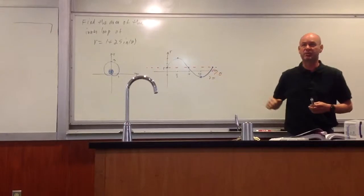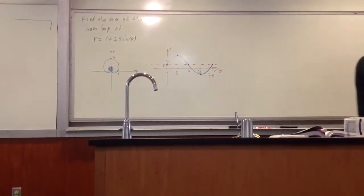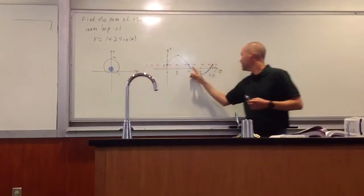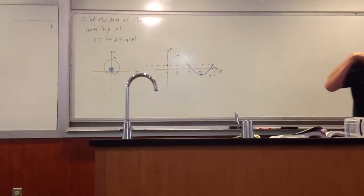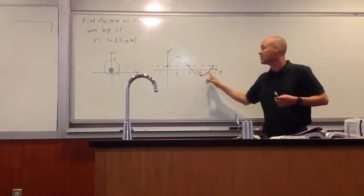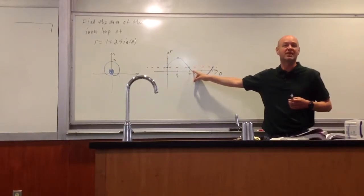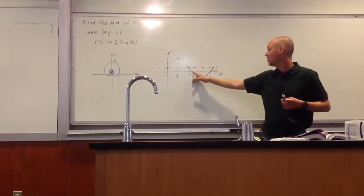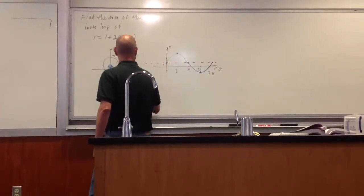I want to talk about the connection between these two. Notice that r, the distance away from the origin, is negative at a very small distance. This under here represents the inner loop — that's where r is negative, actually. We need to find where these places are. What do we know about r when we're crossing this axis? It's zero. So r is zero here. Basically, to find my boundaries of integration, I need to set r equal to zero.